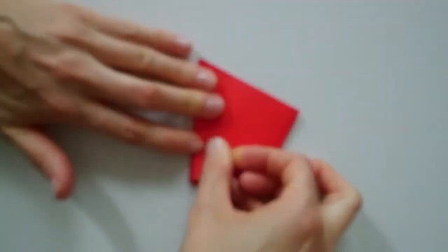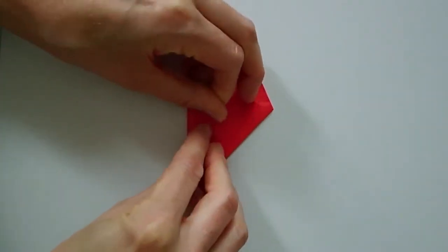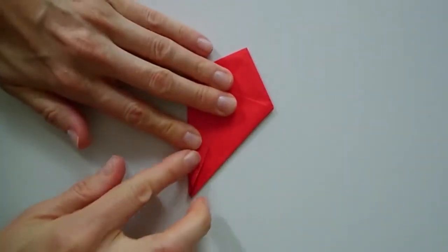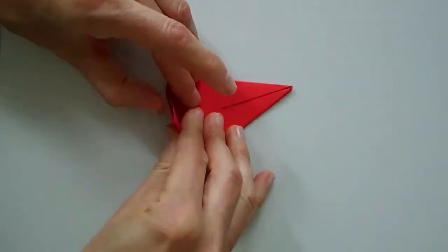The open side of the model must be the one with the sides folded to the middle line. Just like this. Now fold this tip downside.